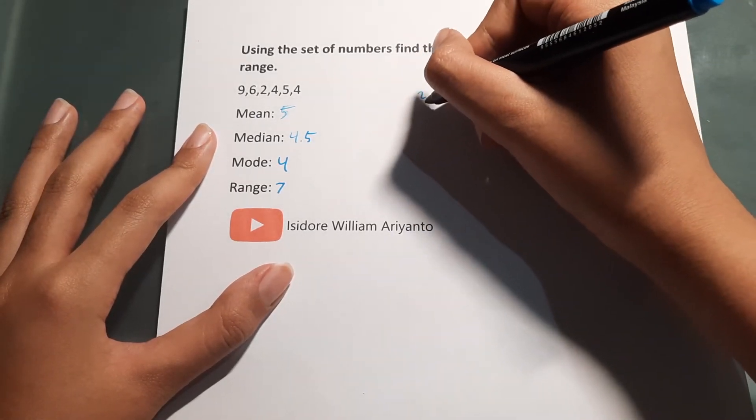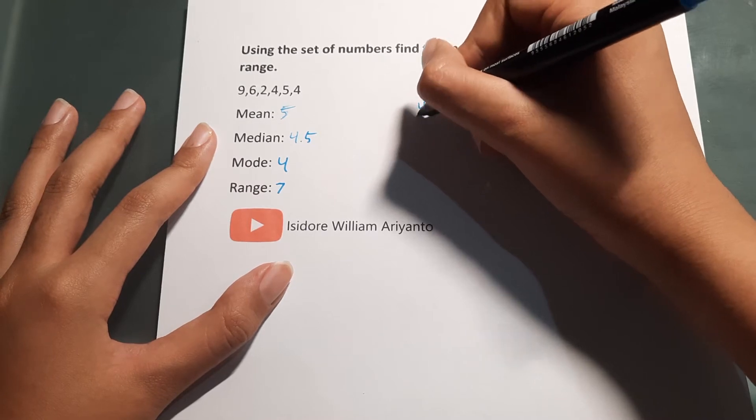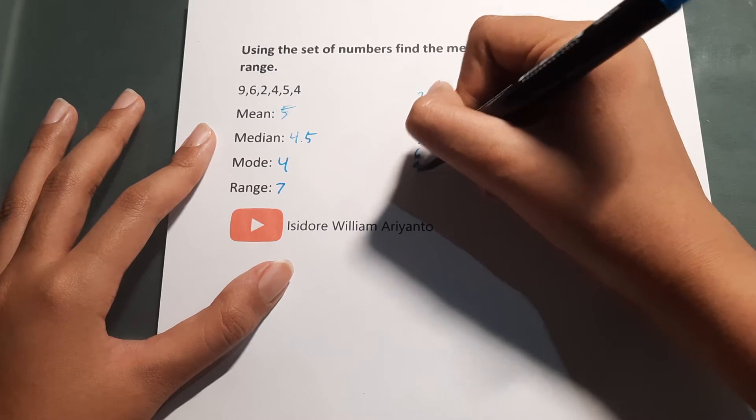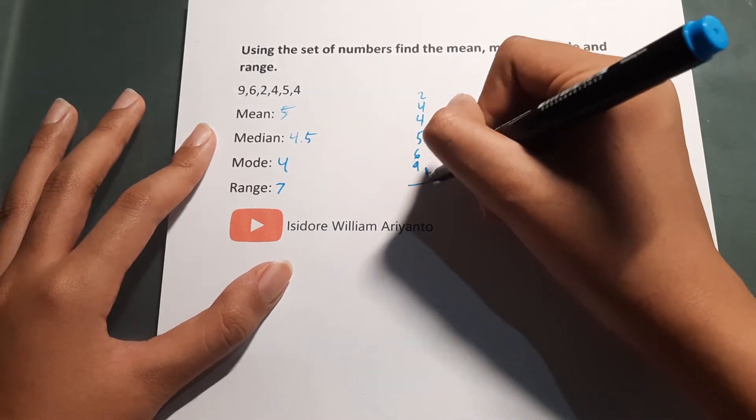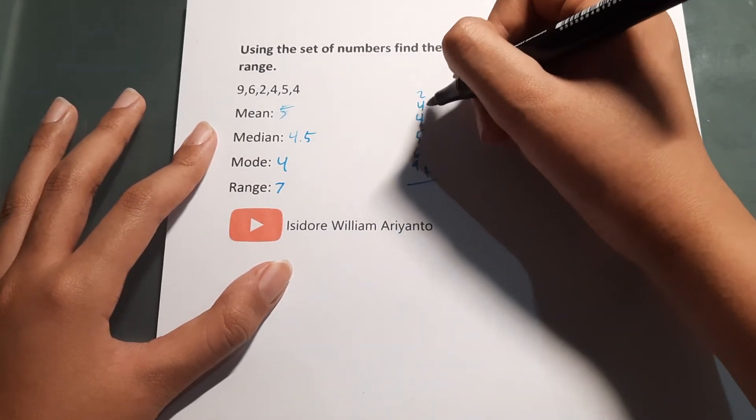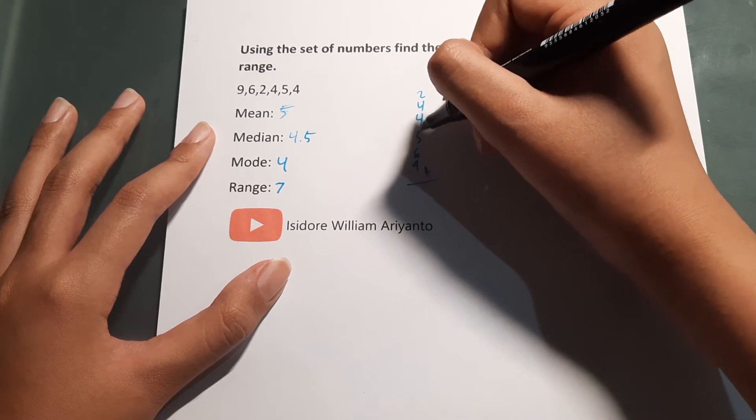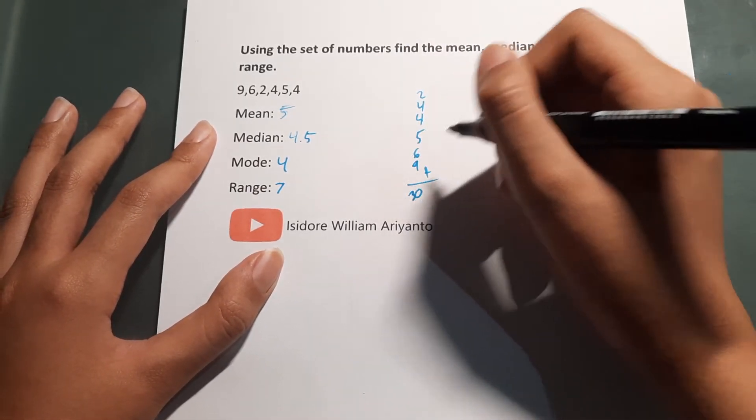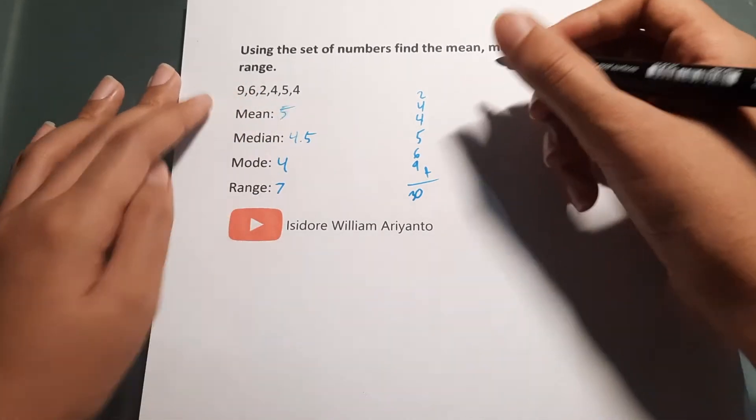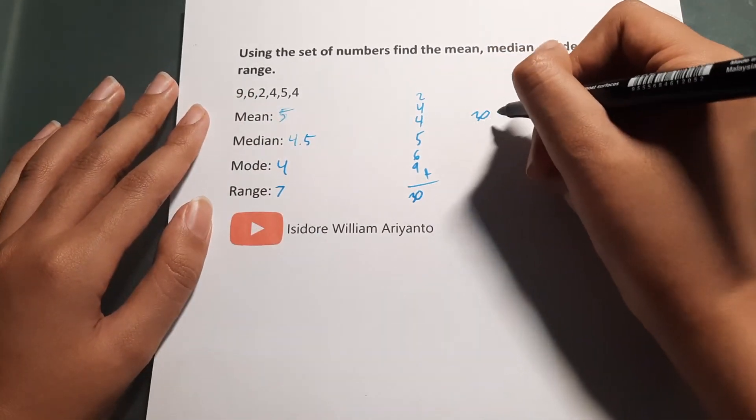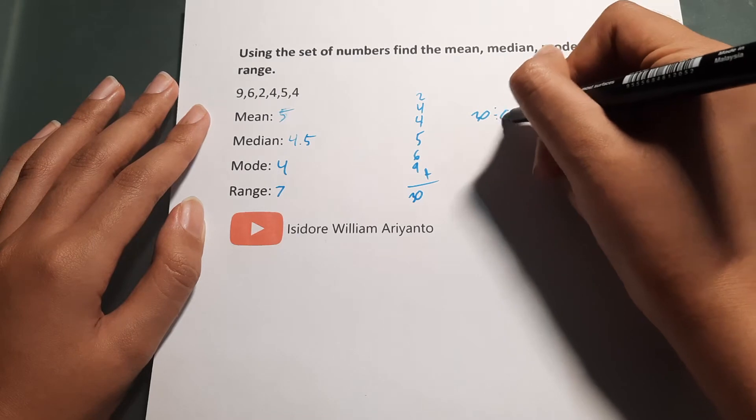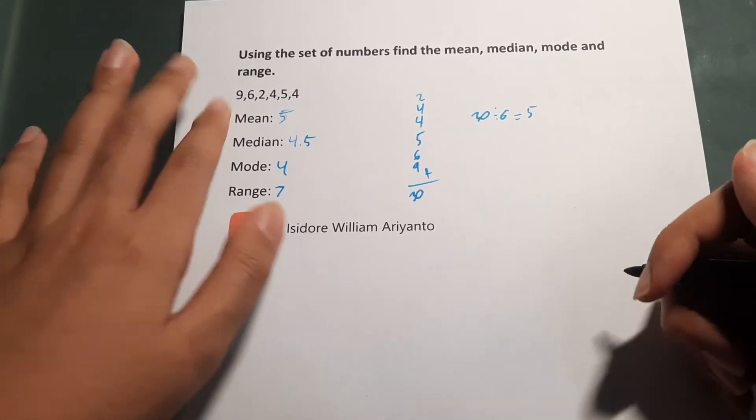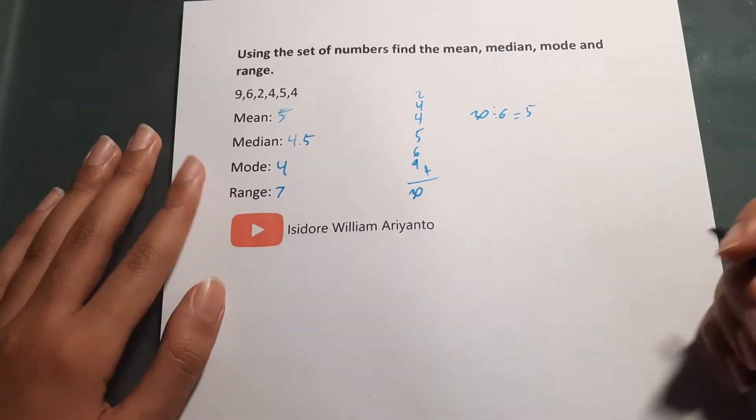Let's do this: 2 plus 4 is 6, 10, 15, 21, 30. And then you need to divide by 6. So 30 divided by 6 is 5. You need to divide it by the amount of numbers here.